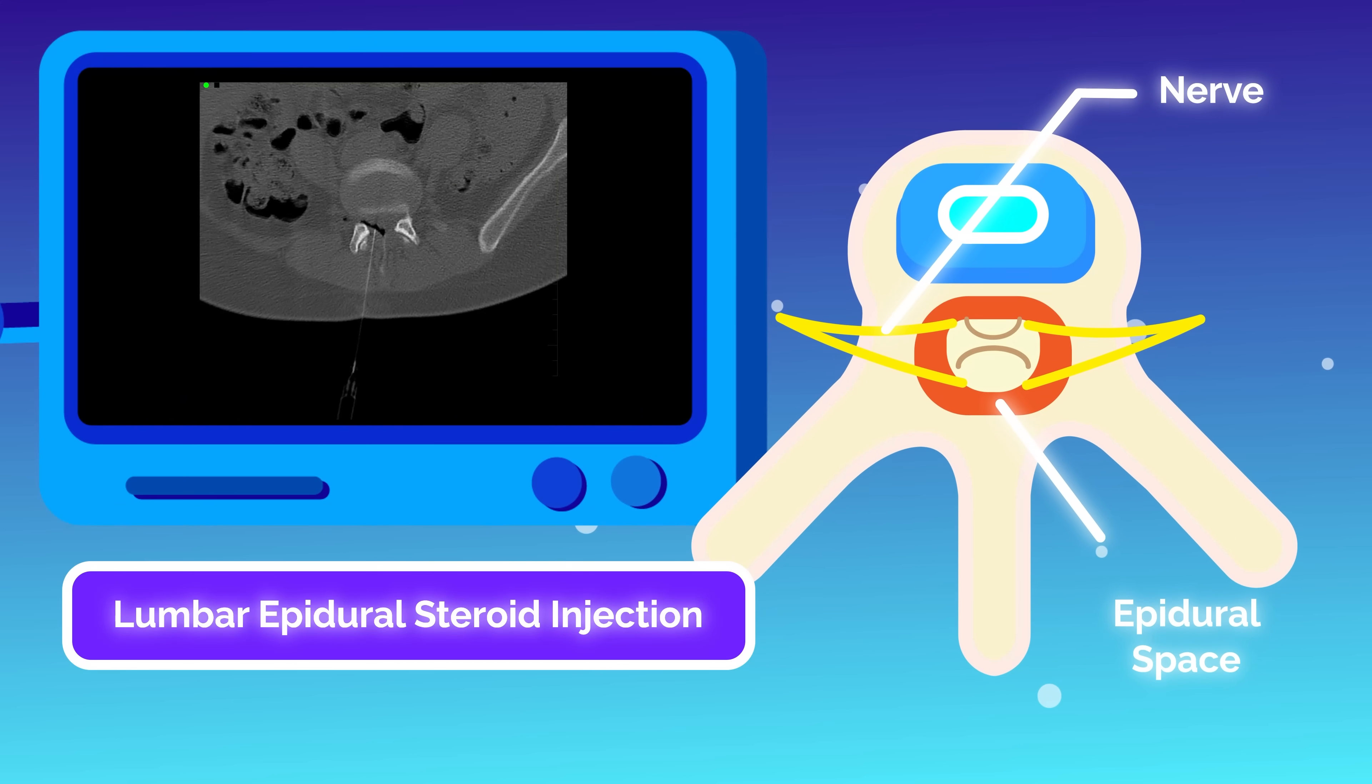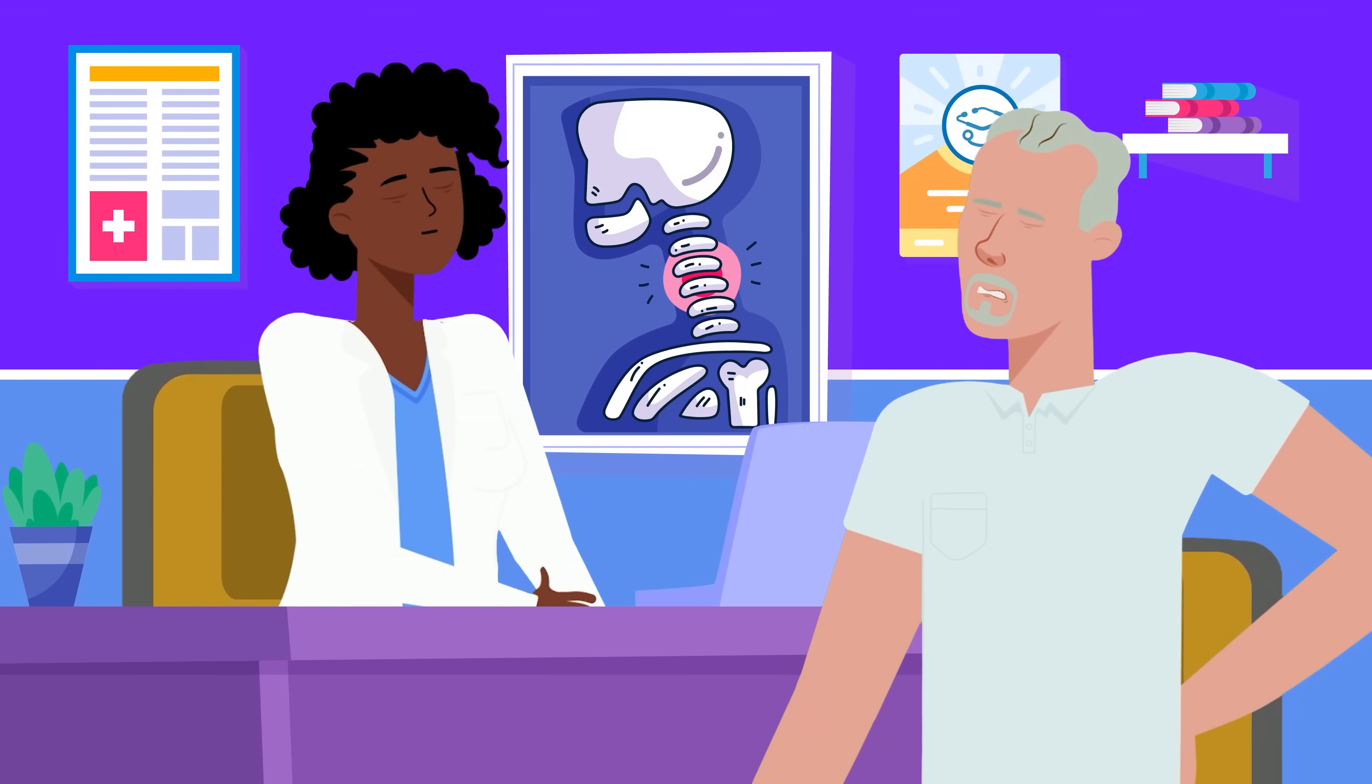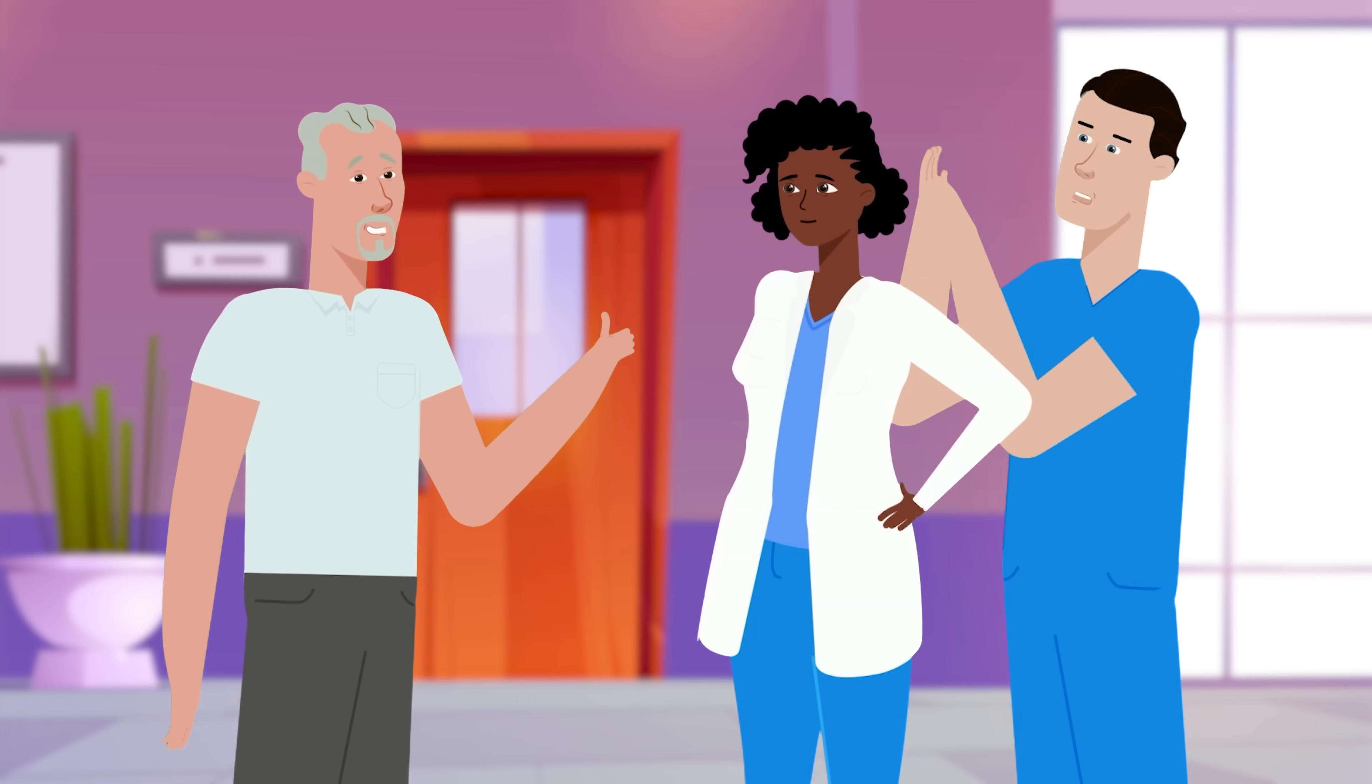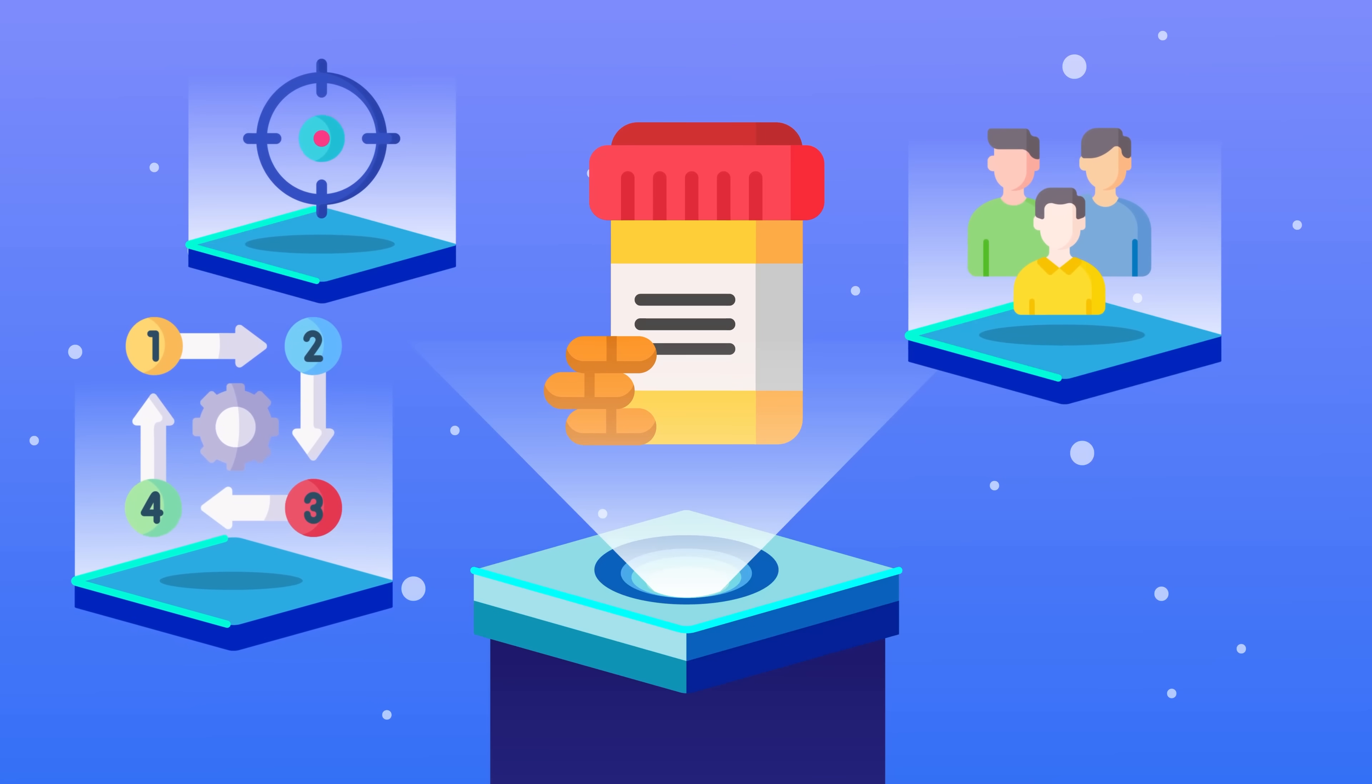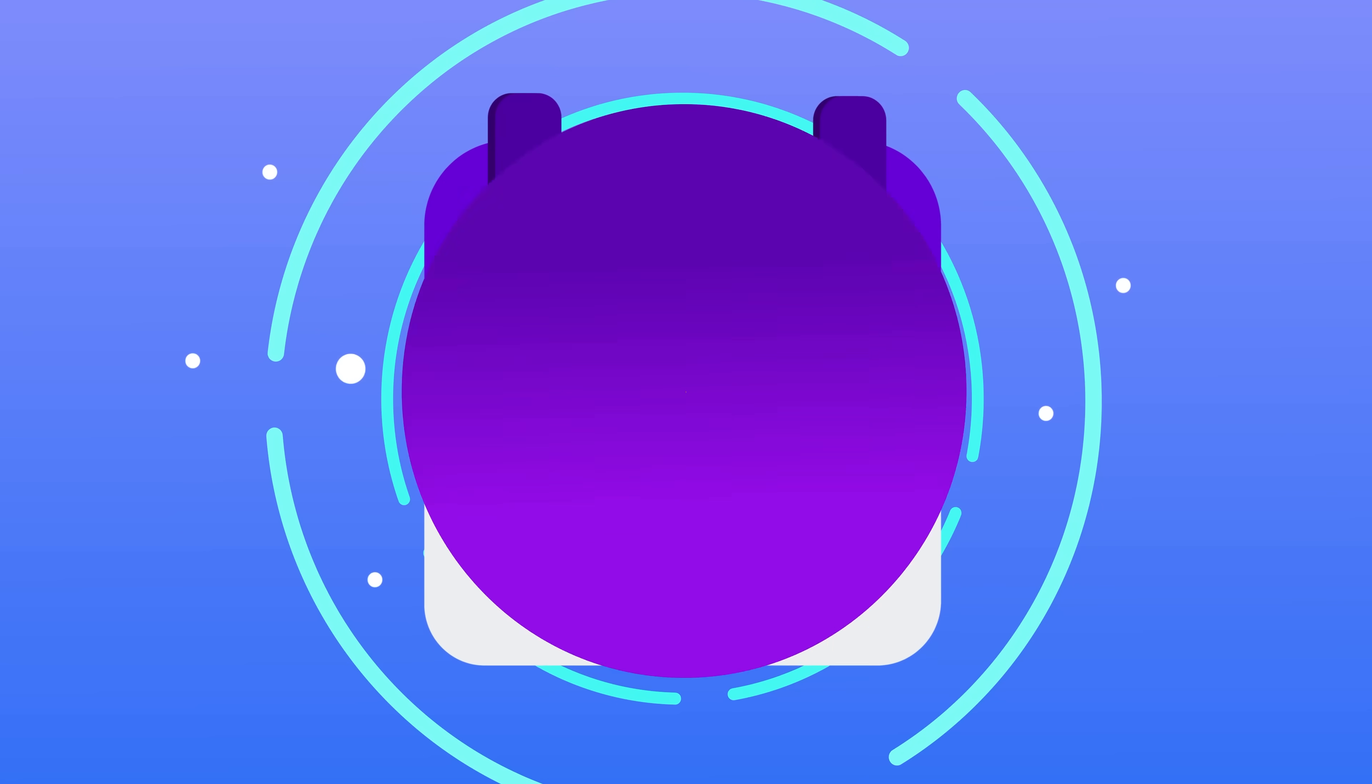Under fluoroscopy, a needle is guided into the epidural space near a compressed nerve root, and steroid medication is injected to reduce inflammation and pain. These steroid injections can delay or prevent spine surgery for some patients, making them an important step for those with chronic back pain. Pain medicine is precise, outpatient heavy, and procedural, and the lifestyle is great. Many pain specialists work four-day clinic weeks with minimal to no call.